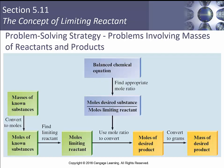Here's a summary of our problem-solving strategy involving masses of reactants and products. Step zero: find the balanced chemical equation, because that gives you the mole-to-mole ratio between A, B, C, and D — between your products and your reactants. Use your moles of desired substance and your mole ratio between that and your limiting reactant. Then figure out the moles of your product and convert that into grams.